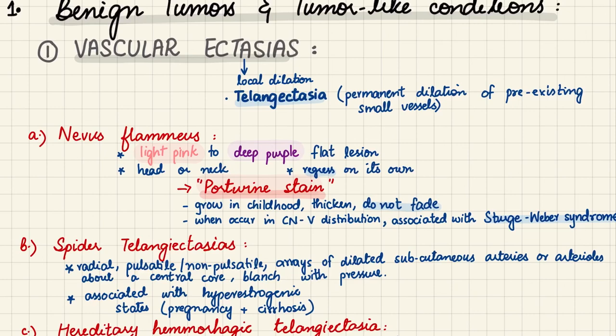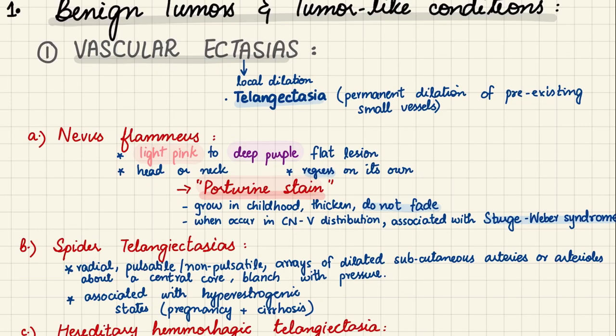Ectasias simply mean local dilations, and telangiectasia means permanent dilation of pre-existing vessels. The first type of vascular ectasias are nevus flammeus, which is the characteristic classic birthmark.